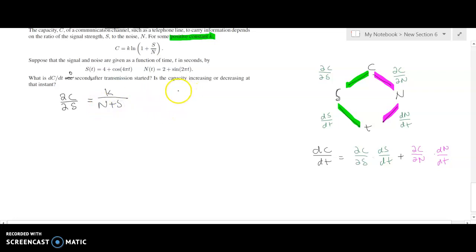And to get dc/dn, I'm going to do the same thing. I would just go back to Wolfram Alpha and replace s with n. And we come up with negative k s over n squared plus ns. Now because we specified in Wolfram Alpha that we're taking the derivative with respect to capital N, it treats everything else as a constant. So we don't have to worry about specifying that to Wolfram Alpha.